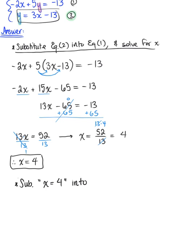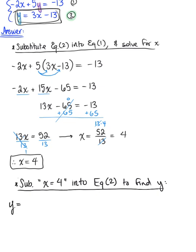Since equation 2 is already solved for y, might as well substitute into equation 2. Substituting x equals 4 into equation 2 to find y, we get y equals 3 times 4 minus 13. That's 12 minus 13, which gives us negative 1. So y is minus 1.